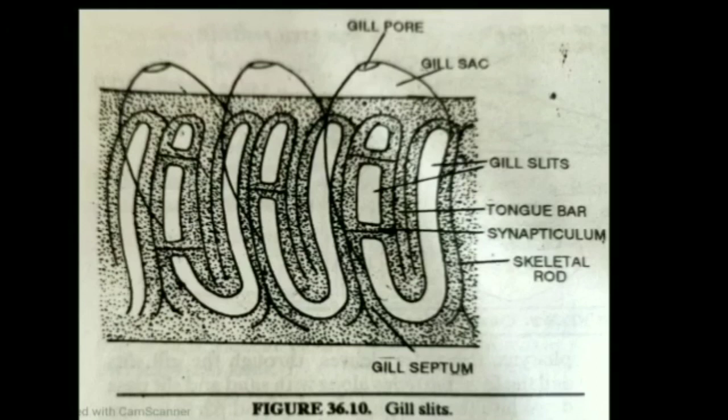This mode of development — gill slits being initially oval and later becoming U-shaped due to the tongue bar — resembles a protochordate, specifically Branchiostoma or Amphioxus. This is another similarity between Balanoglossus and chordates. So gill slits were earlier oval but later become U-shaped due to growth of the tongue bar between them.